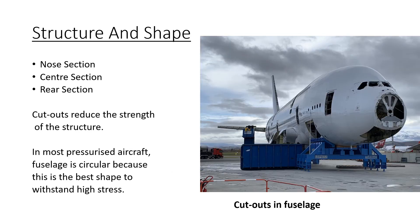The fuselage has three main sections: the nose section, the center section, and the rear section. Of these three, the center section has to be the stiffest and the strongest, because it is the one that carries the highest load.